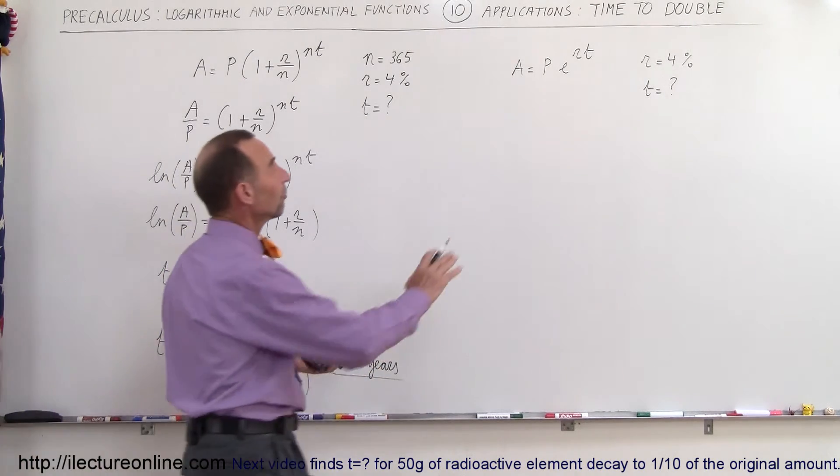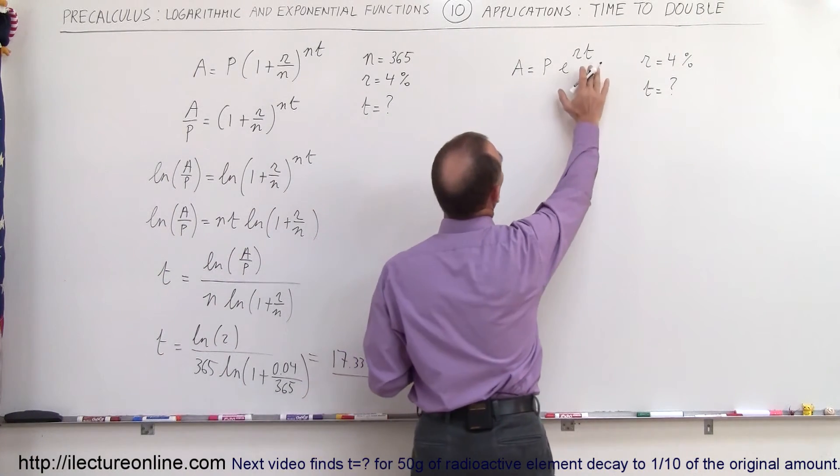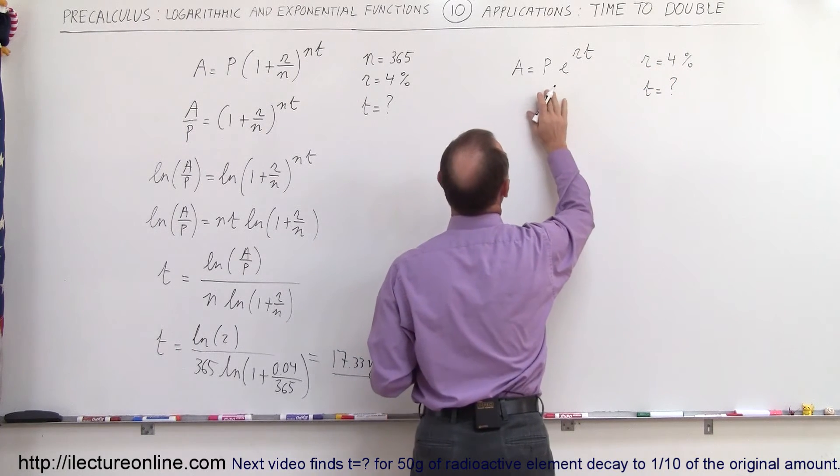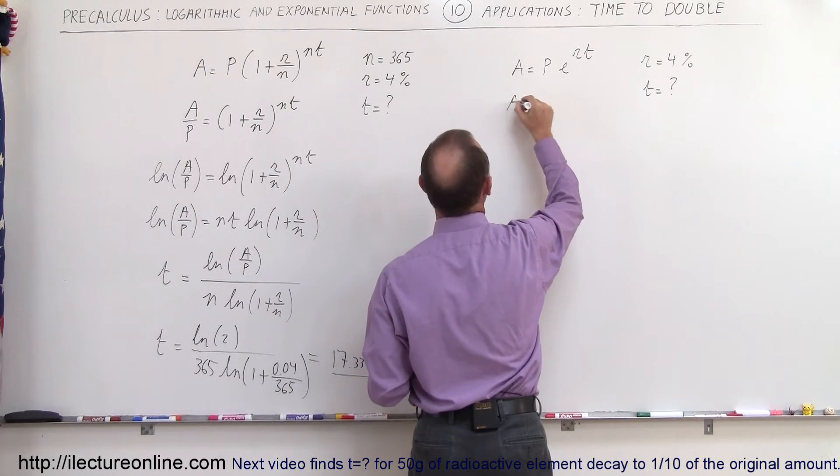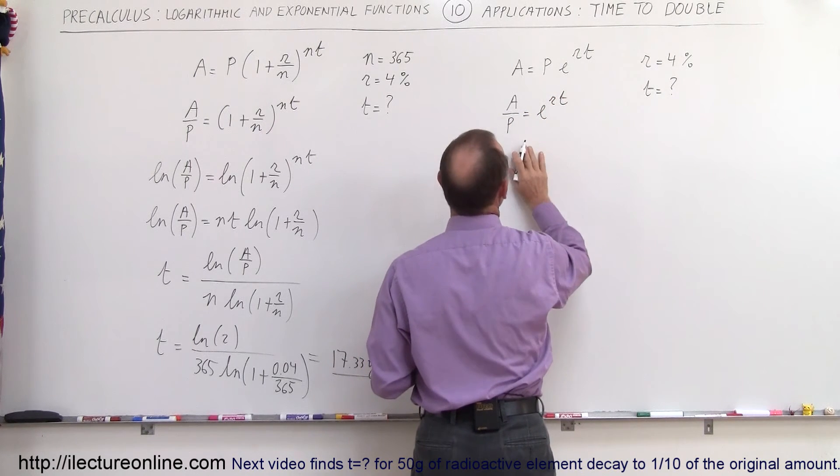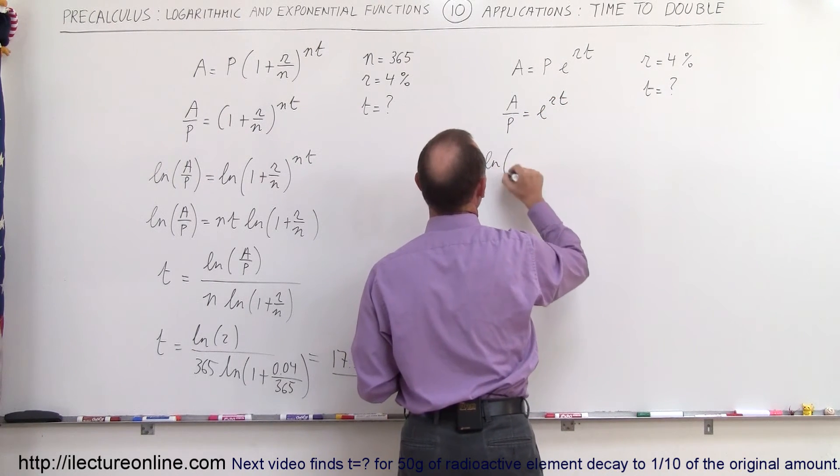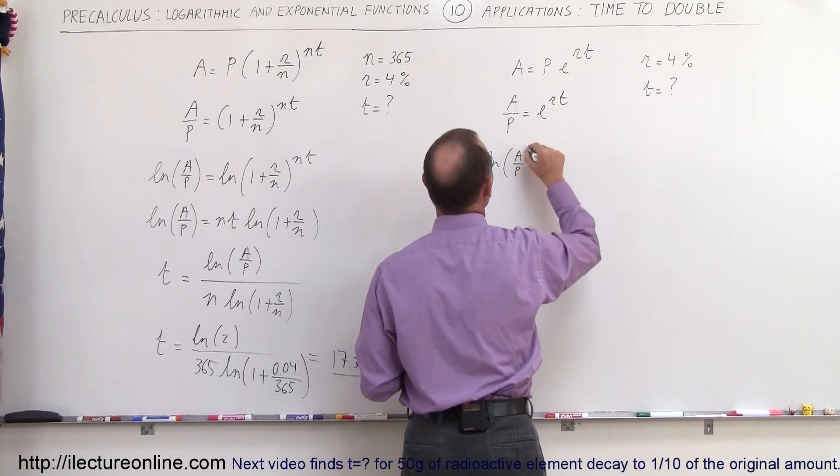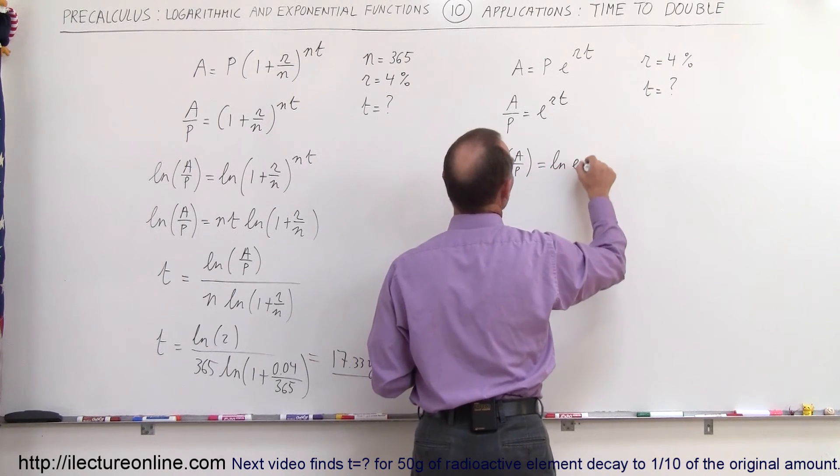Now we're going to take the exponential function and do the same thing. We're going to solve for t, knowing that the rate is 4%. So again, we divide both sides by p, we get a divided by p is equal to e to the r times t. Take the natural log of both sides, so we get the natural log of a divided by p is equal to the natural log of e to the rt.